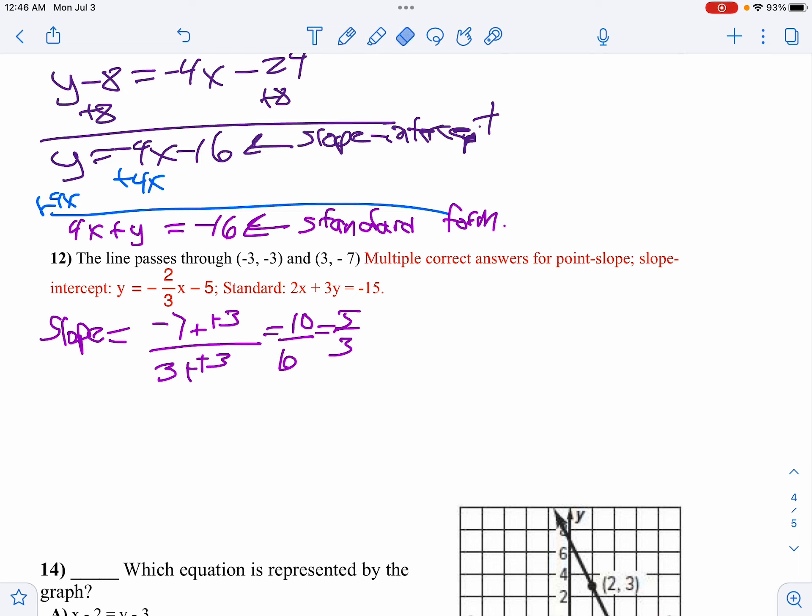Oops. I just noticed I made a mistake there, didn't I? Let's redo that. Negative 7, I didn't notice the negative. Negative 7 plus 3 is negative 4 all over 6. So I divide that by 2, and we get negative 2 over 3.